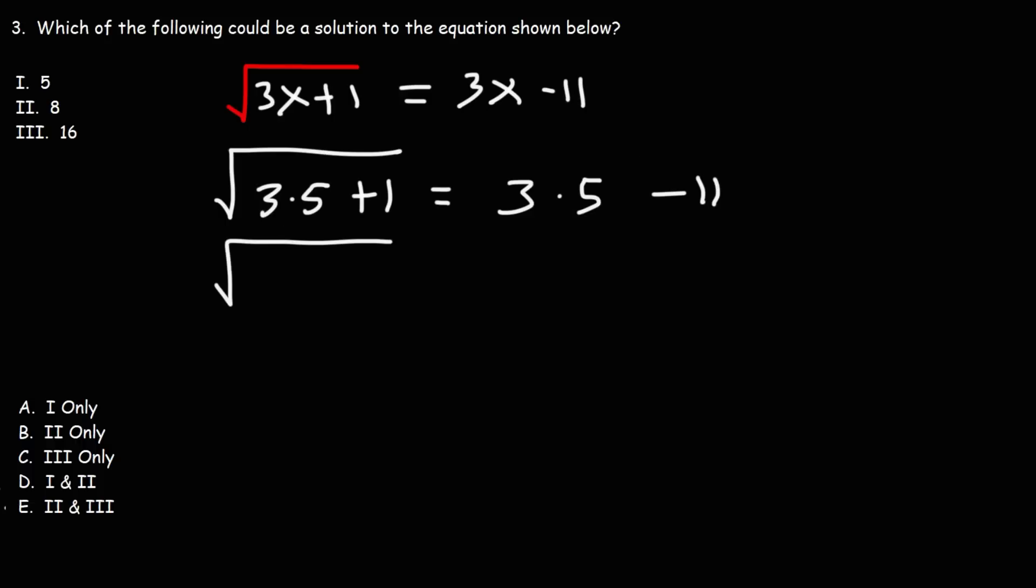3 times 5 is 15. Plus 1, that's 16. Here we have 3 times 5, which is 15 minus 11. The square root of 16 is 4. And 15 minus 11 is also 4. So, because the left side is equal to the right side, we know that 5 is a solution because we replaced x with 5. So the first one works.